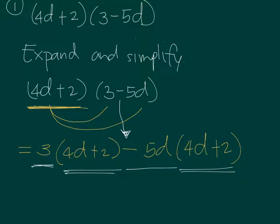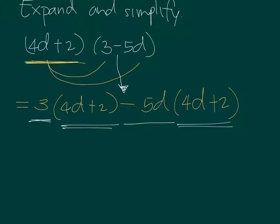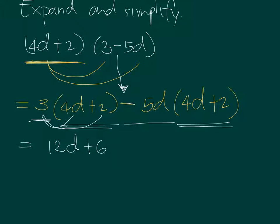After the first distribution, we perform another distribution within each group. So 3 times 4D is 12D, and 3 times 2 is plus 6. For the 5D term, note it is preceded by a minus sign, so we treat it as negative 5D. Negative 5D times 4D gives negative 20D squared, and negative 5D times 2 gives negative 10D.